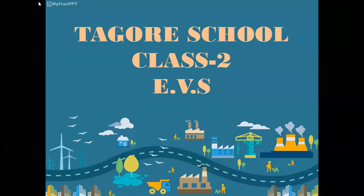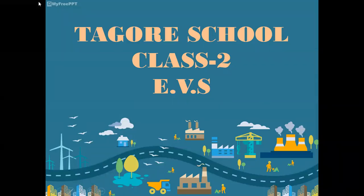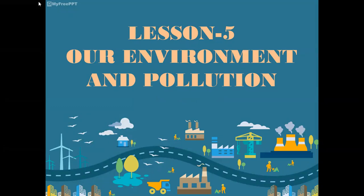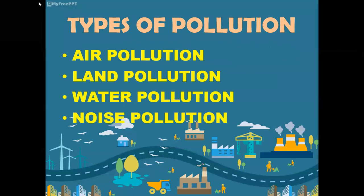Hello students, welcome to the EVS class. Today we will continue with our lesson 5 and the name of the lesson is Our Environment and Pollution. We have four types of pollution: air pollution, land pollution, water pollution, and noise pollution. In our last video, I told you about land pollution and water pollution. So today we will discuss about air pollution and noise pollution.